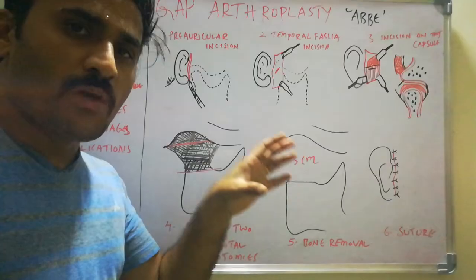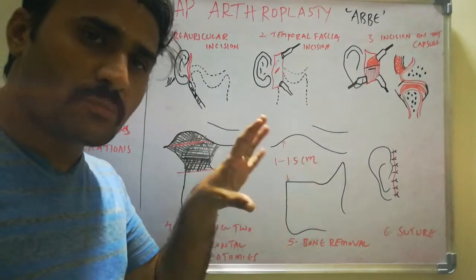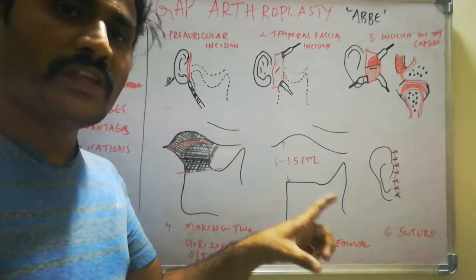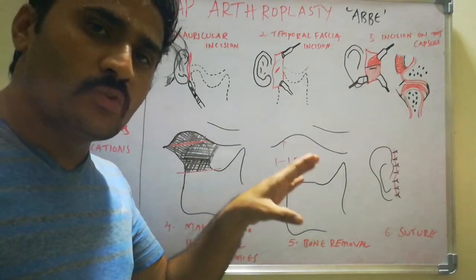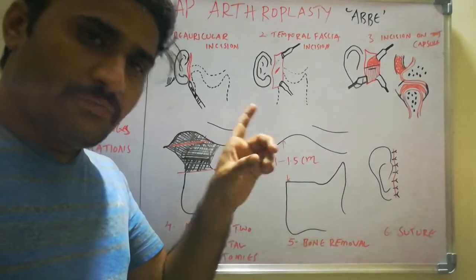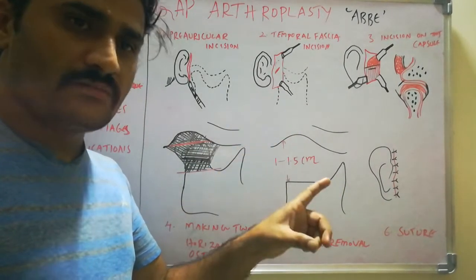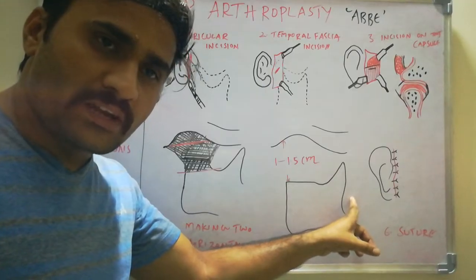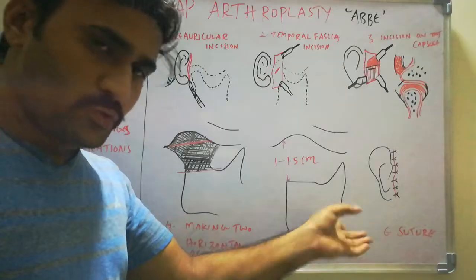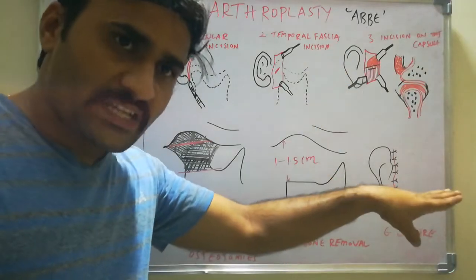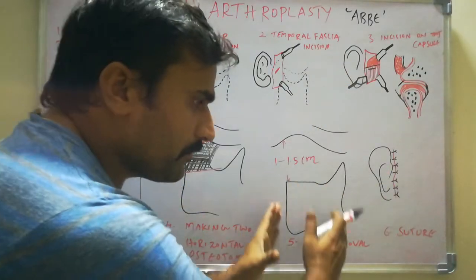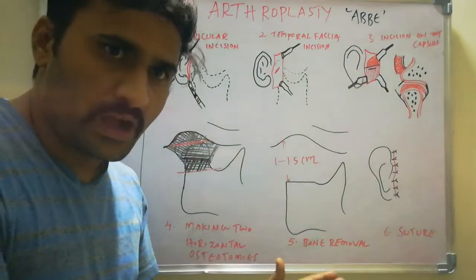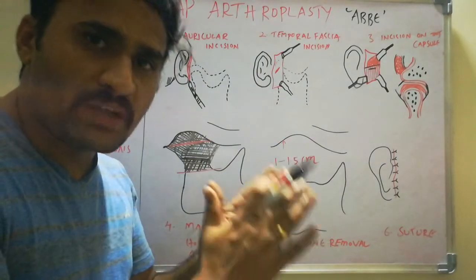Check for mouth opening. If it is more than 35 mm, there is no need for coronoidectomy. If it is not more than 35 mm, perform ipsilateral coronoidectomy, and if required, contralateral coronoidectomy as well. From this step, you must follow Kaban's protocol.